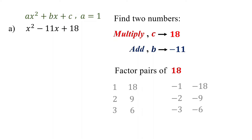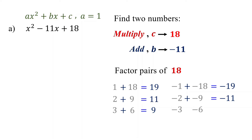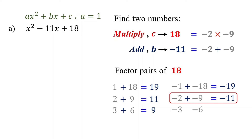Next, we need to figure out which pair adds up to negative 11. Let's add them to find out. 1 plus 18 equals 19. 2 plus 9 equals 11. 3 plus 6 equals 9. Negative 1 plus negative 18 equals negative 19. Negative 2 plus negative 9 equals negative 11. We have found the numbers — they are negative 2 and negative 9. There is no need to check the remaining factor pair, as only one pair satisfies both conditions. Therefore, the trinomial is factored as (x minus 2) times (x minus 9).